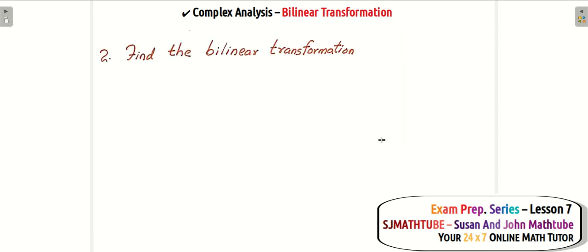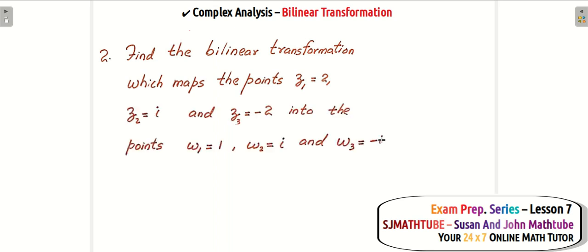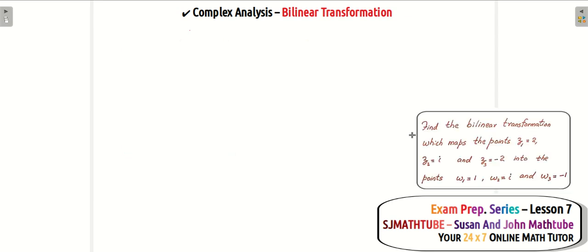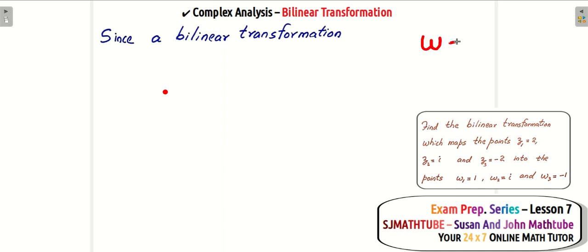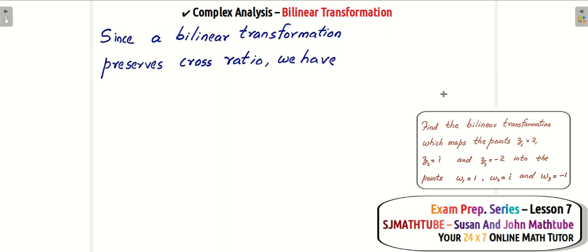Now let's try one more question. Find the bilinear transformation. I hope all of you are doing these problems along with me — I hope you are ready with pen, paper, everything. The input values are 2, i, and minus 2. The output of 2 is 1, the output of i is i, and the output of minus 2 is minus 1. Since a bilinear transformation preserves cross ratio, a bilinear transformation is a complex valued function in the form az plus b, the whole divided by cz plus d.